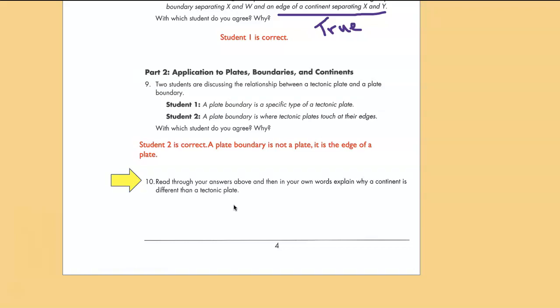Explain why a continent is different than a tectonic plate. Well a tectonic plate can contain a continent but it usually also contains ocean crust. The whole plate moves as one piece and the continent is embedded in the tectonic plate. Remember, this is what Wegener didn't understand.